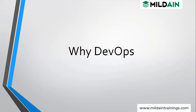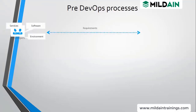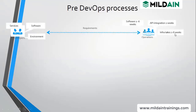If we see a pre-DevOps process, we have developers, software environment, services, and requirements. In pre-DevOps, software development took two to six weeks, deploying software took two to three weeks, API integration took two weeks, and infrastructure took two to eight weeks. So it was taking too much time overall.